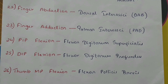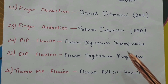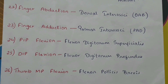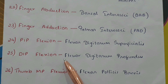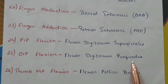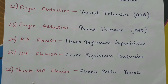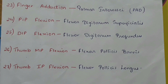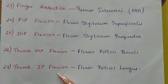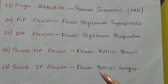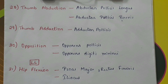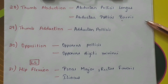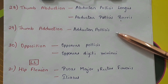PIP flexion, that is proximal interphalangeal joint flexion, done by flexor digitorum superficialis. DIP, that is distal interphalangeal joint flexion, by the flexor digitorum profundus. Thumb MP flexion by the flexor pollicis brevis and thumb IP flexion by the flexor pollicis longus. Thumb abduction by the abductor pollicis longus and abductor pollicis brevis. Thumb adduction by the adductor pollicis.